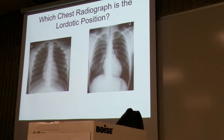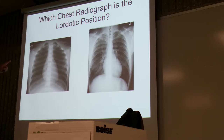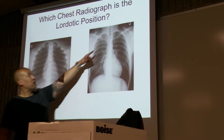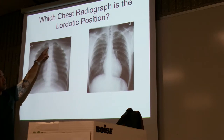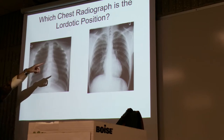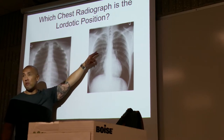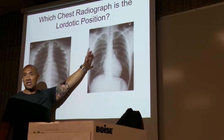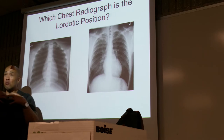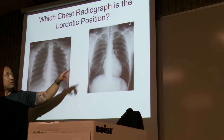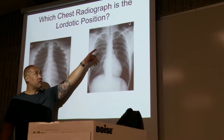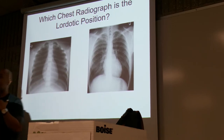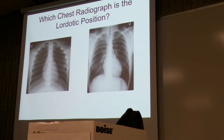The whole purpose of an axial lordotic projection is to throw the clavicles up. Notice where the clavicles are now — they're no longer in the middle. Your clavicle normally sits at the level of T3, thoracic spine 3. On a normal AP or PA projection of the chest, the sternoclavicular joint is at the level of T3.